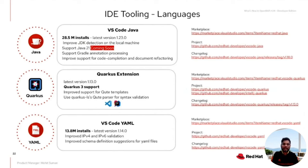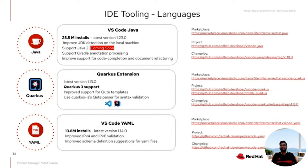For the VS Code YAML extension, we are reaching around 14 million installs. We've done improvements around validations for IPv4, IPv6, and improving schema definition for YAML files. VS Code YAML is used as a dependency for multiple IDE extensions across various companies and acts as a strong foundation for configuring YAML files. We're actively doing releases every three weeks, so feel free to get in touch if you need any specific requirements or features.